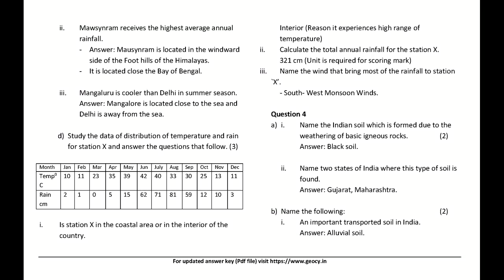Is station X in the coastal area or in the interior of the country? Answer: Interior — reason: it experiences a high range of temperature. Name the Indian soil formed due to the weathering of basic igneous rocks. Answer: Black soil. Name two states where this type of soil is found. Answer: Gujarat and Maharashtra.